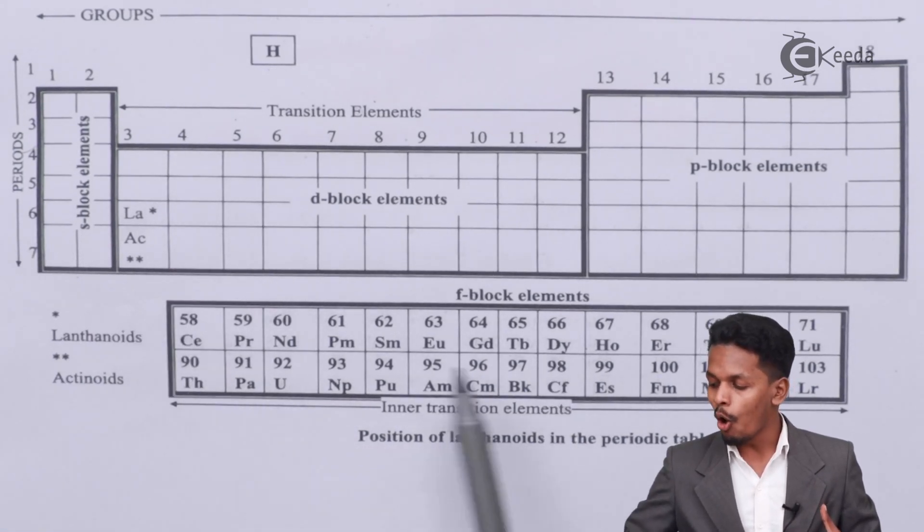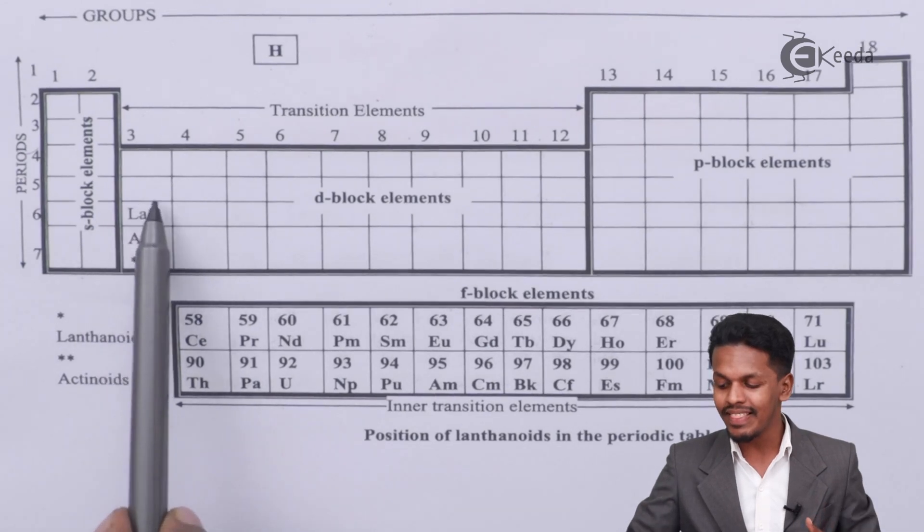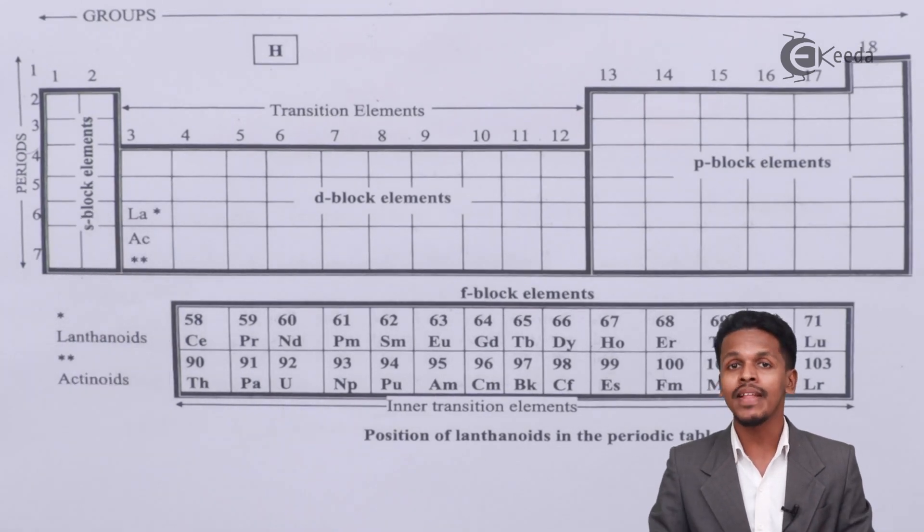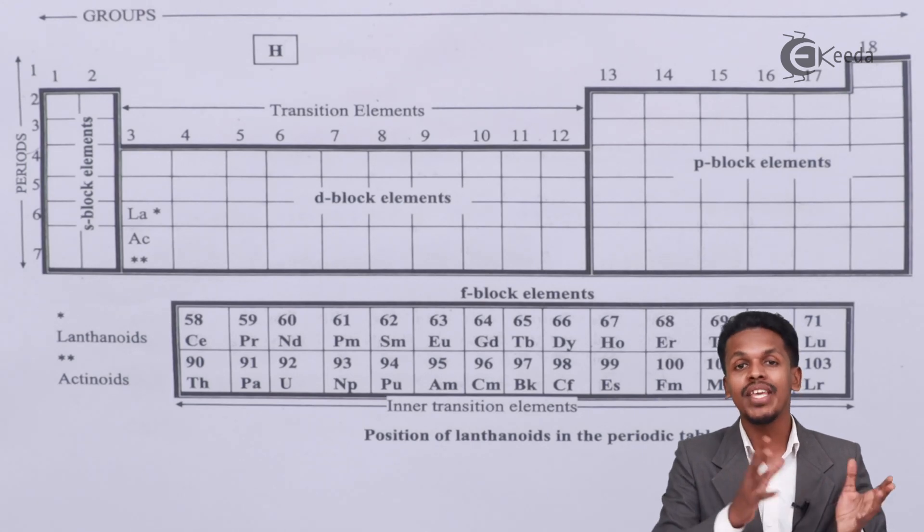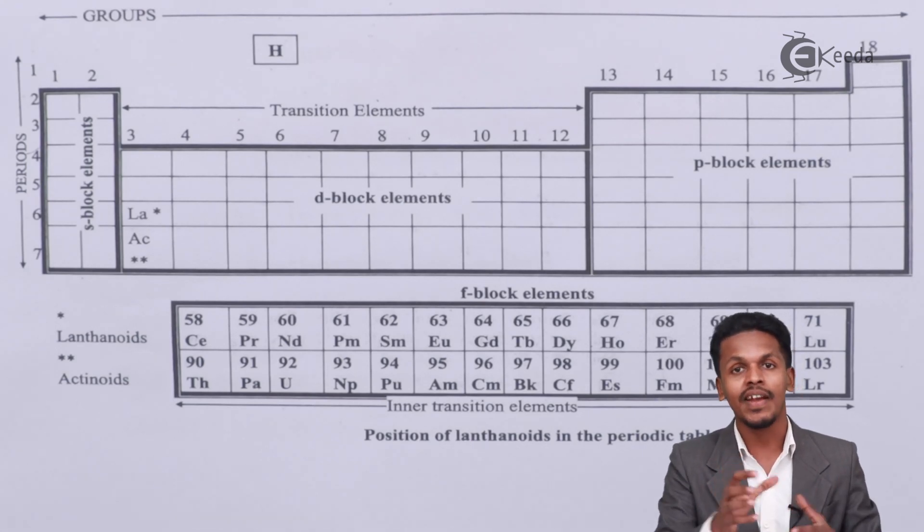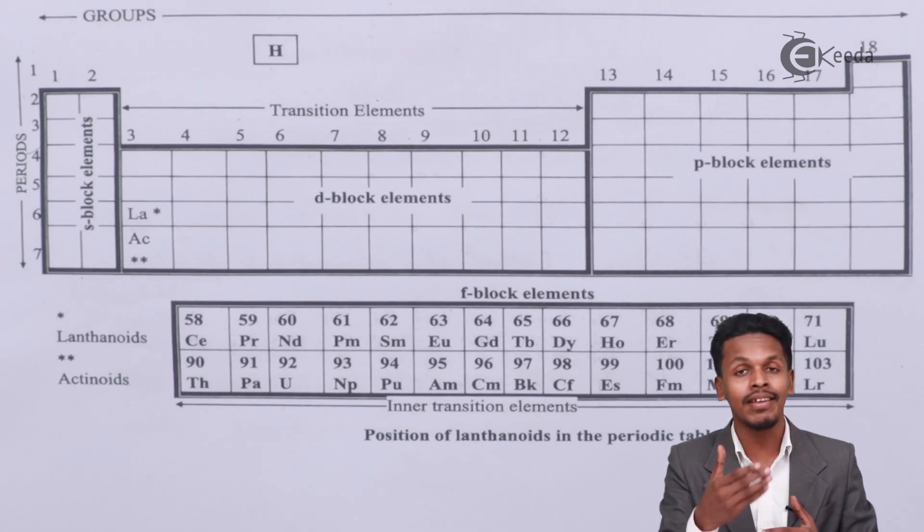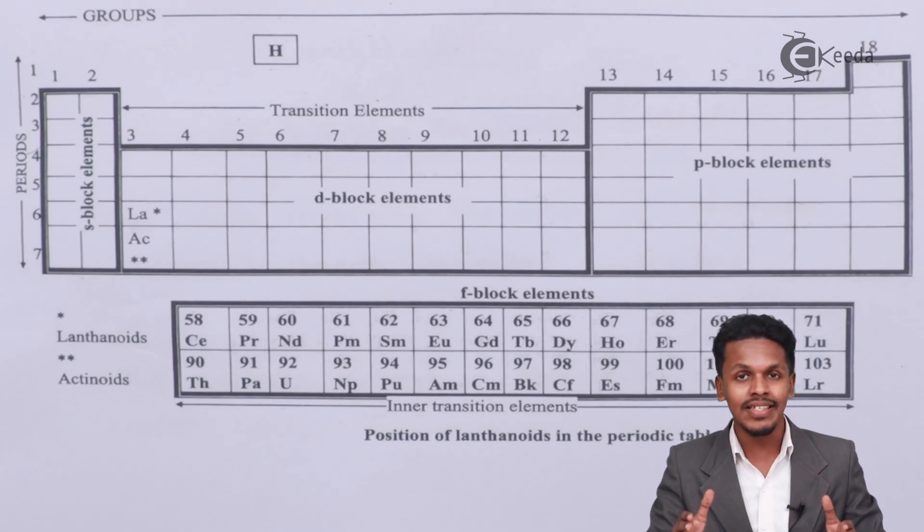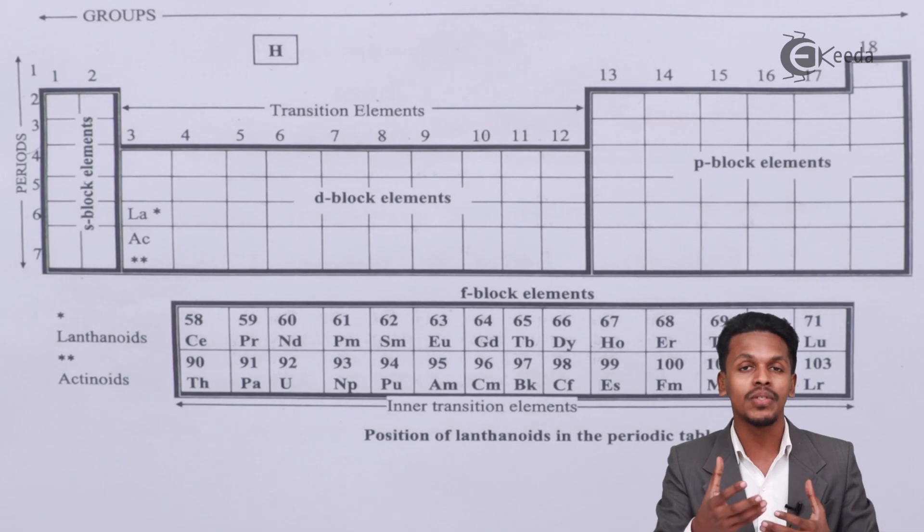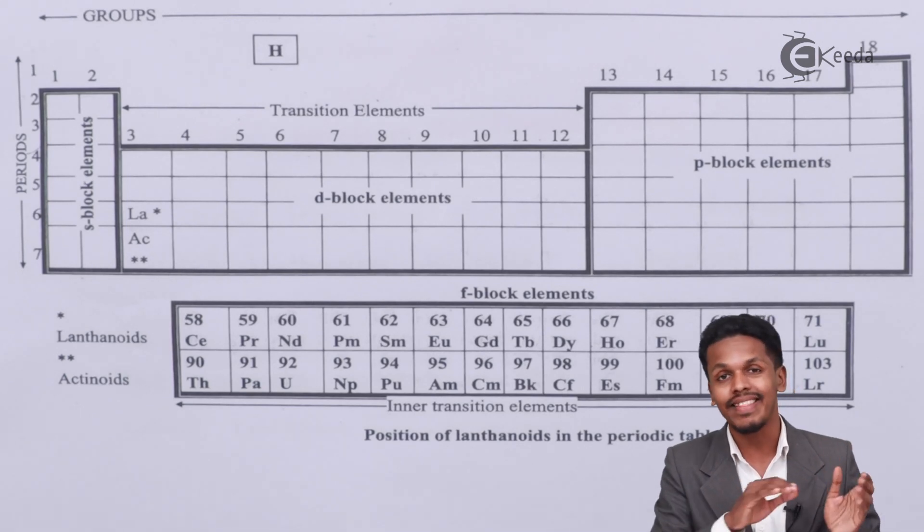So why are all these elements placed in this position only? The reason is as we understand in the periodic table, we arrange the elements in such a way that the atomic size goes on decreasing across the period. The atomic size will go on increasing from top to bottom. So as the atomic size increases from top to bottom, we also observe that the atomic size decreases across the period.